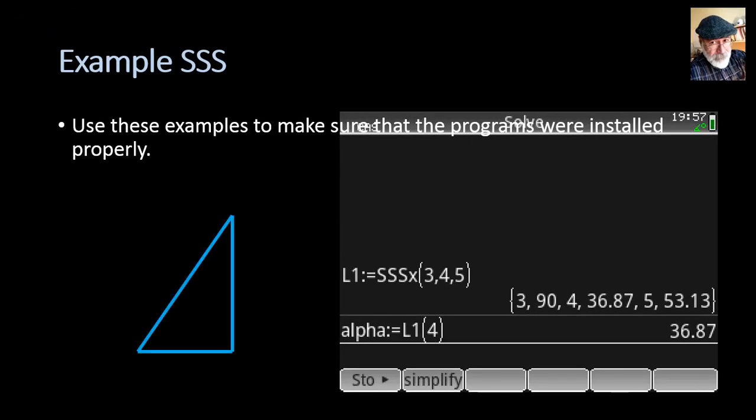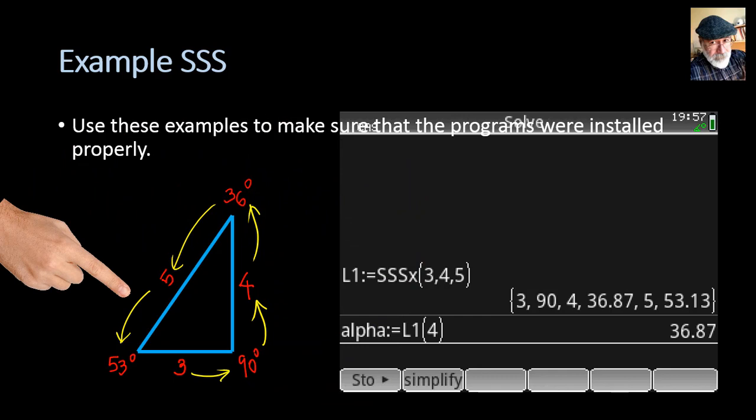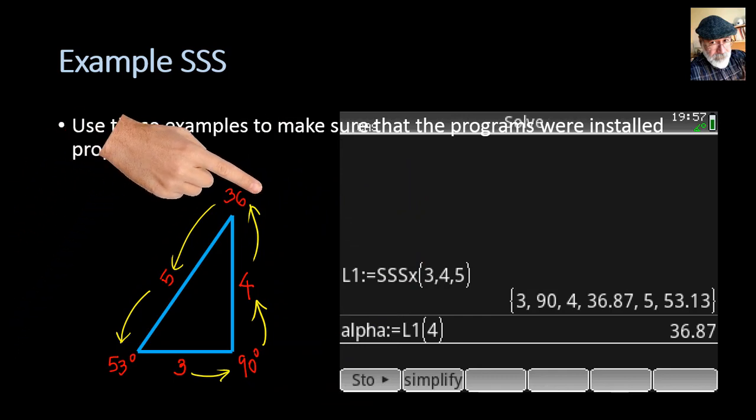There's our triangle, and these are the sides: 3, 90 degrees, 4, 36 degrees, 5, 53 degrees. Actually, 36 is more like 37, but that's fine.